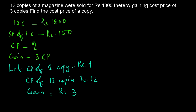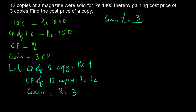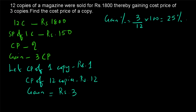Cost price of 12 copies is ₹12 and gain is ₹3. So gain percentage equals 3 divided by 12 into 100, which is 1/4 into 100, equal to 25 percentage.